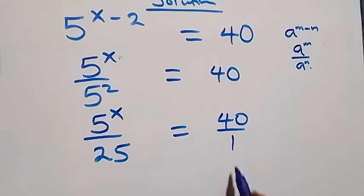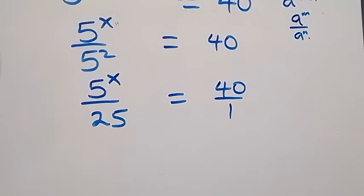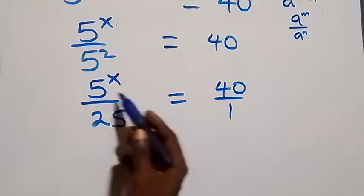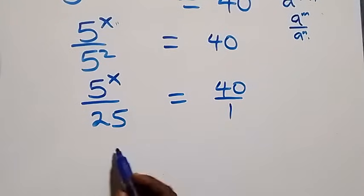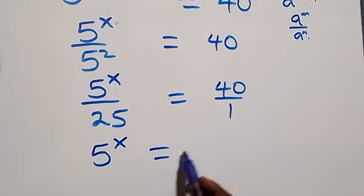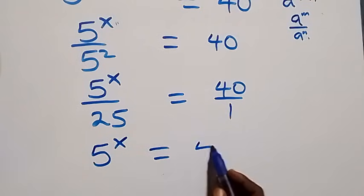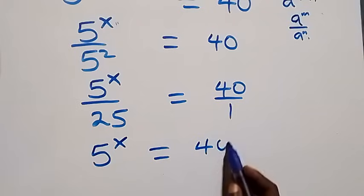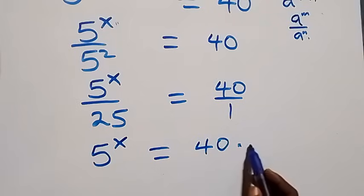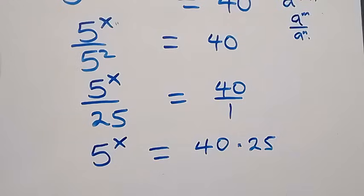Writing 40 over 1 and cross multiplying, 5 raised to power x times 1 is still 5 raised to power x, and that equals 40 times 25.